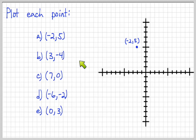Alright, (3, -4), so from the origin, one, two, three, and then down four, one, two, three, four. Our point will go here, and I'll label it for you.